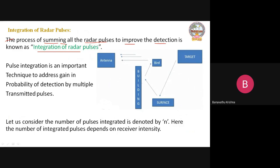The process of summing all the radar pulses to improve the detection is known as integration of radar pulses. Here in this block diagram, this is the antenna from the radar station. It is transmitting the signal to the target, and then the target sends the echo signal to the radar receiver station. Two of the signals are directly from target to radar receiver station, and one more signal is reflected in another way — it is reflected over the surface, then off a building, and then reflected back to the radar receiver station. All these signals we have to process and integrate, then only we can identify whether the target is present in the radar or not.